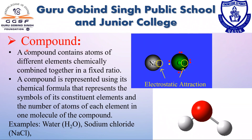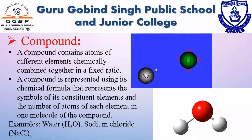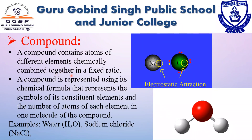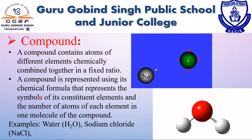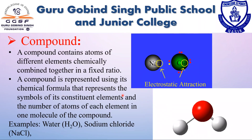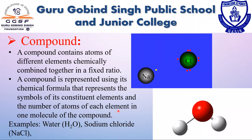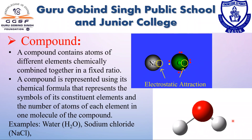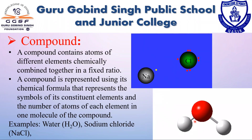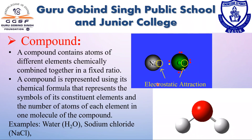Let's discuss about compound. A compound contains atoms of different elements chemically combined together in a fixed ratio. A compound is represented using its chemical formula, which represents the symbol of its constituent elements and the number of atoms of each element in one molecule of the compound. For example, water is represented by the symbol H₂O and sodium chloride is represented as NaCl.